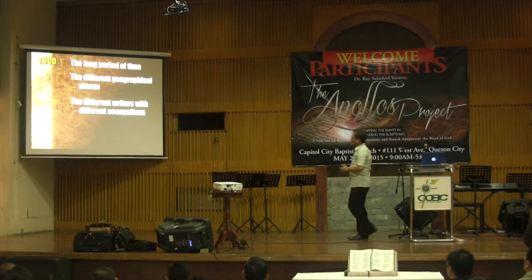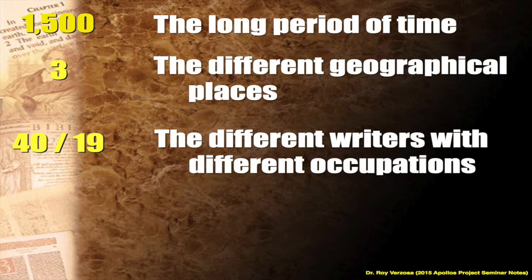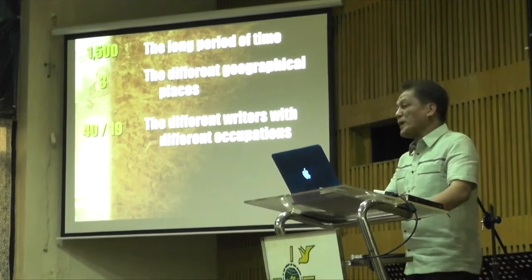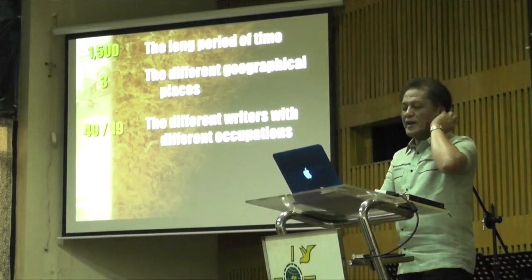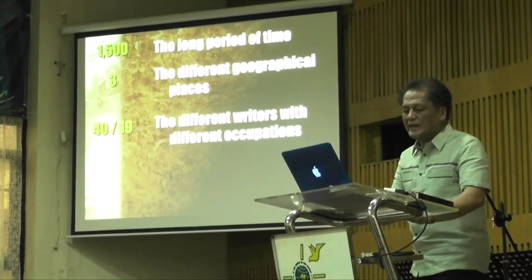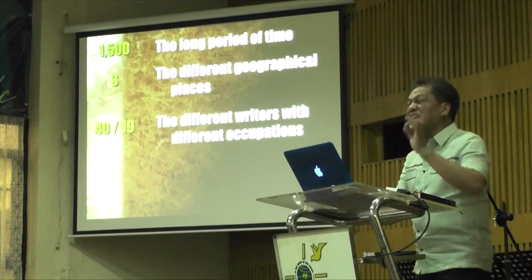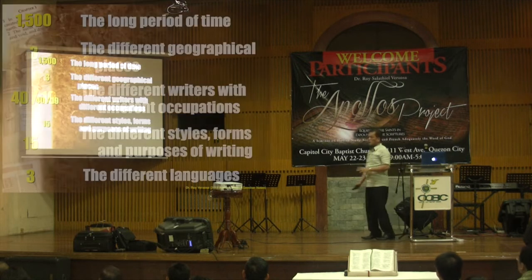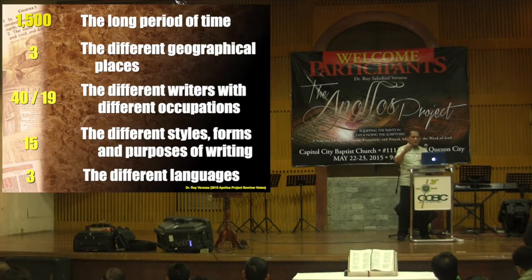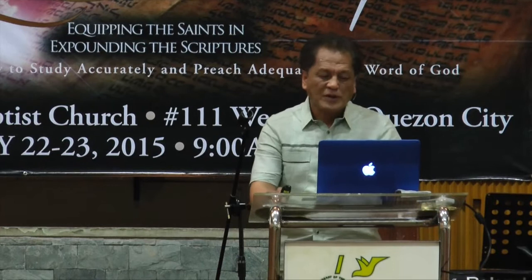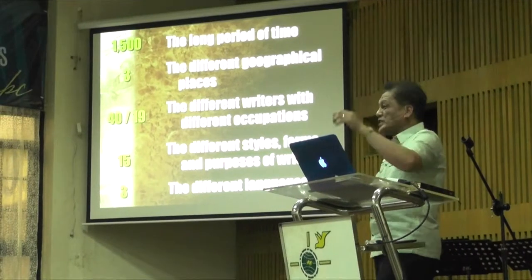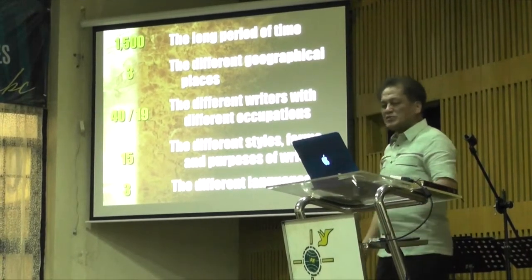Number four — the different writers and different occupations. About 40 different writers living in different places who don't really know each other, with different occupations — not all religious people. We have farmers, kings, fishermen, and different trades — 40 writers with 19 different occupations. And then the different styles and forms of writing — about 15 different literary genres listed in your workbook. And then of course, three different languages: most of the Old Testament written in Hebrew, some portions in Aramaic, and the New Testament written in Greek.